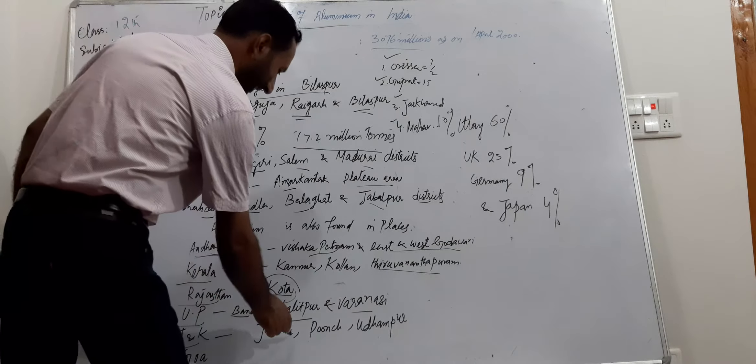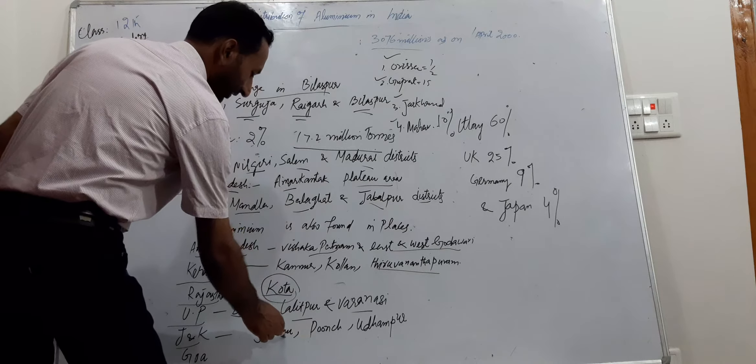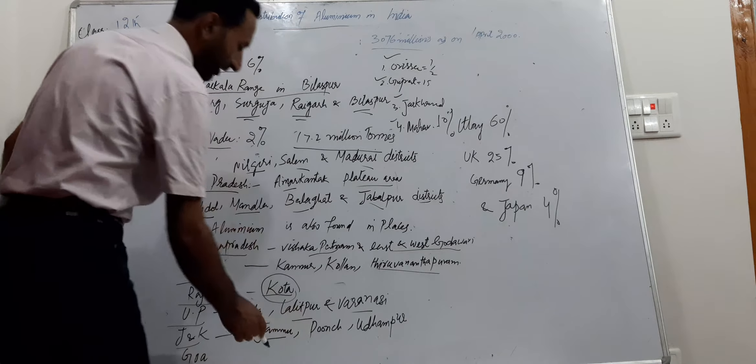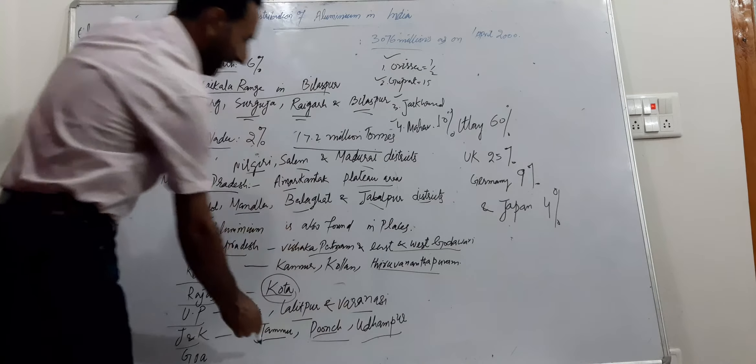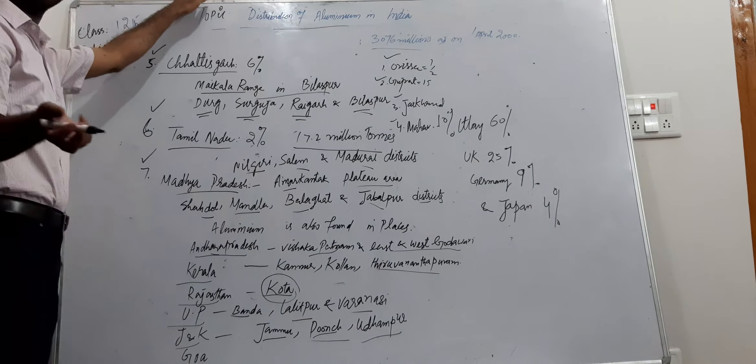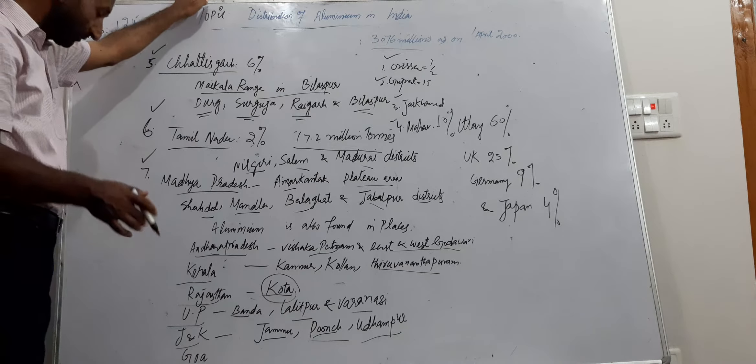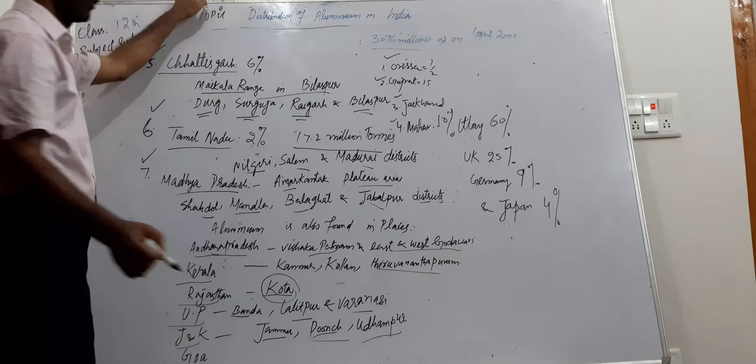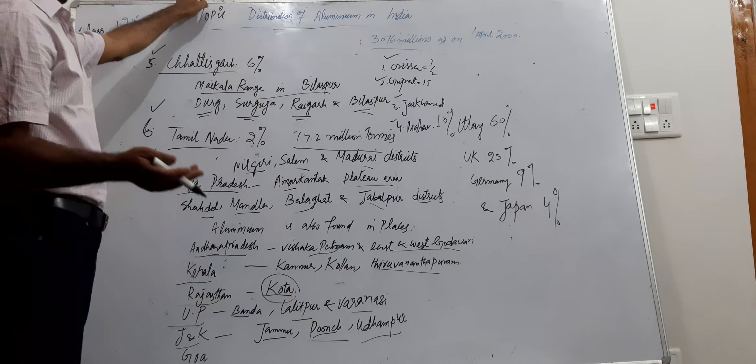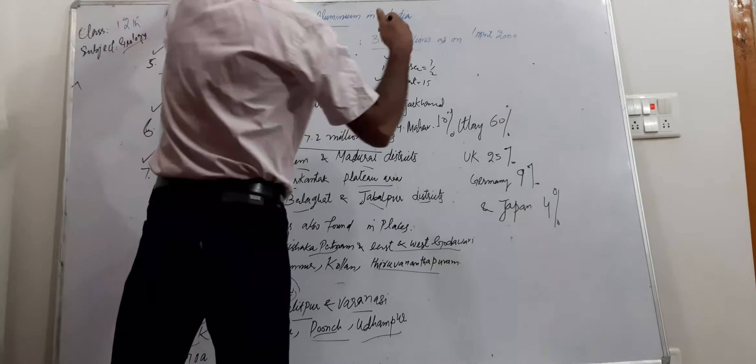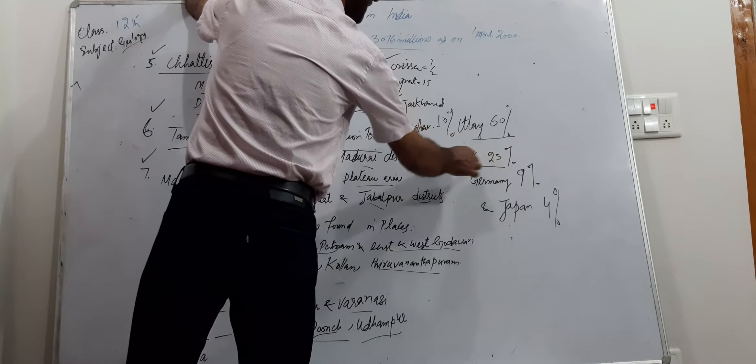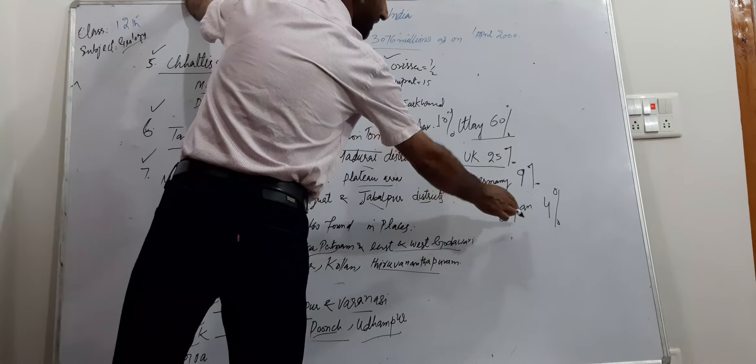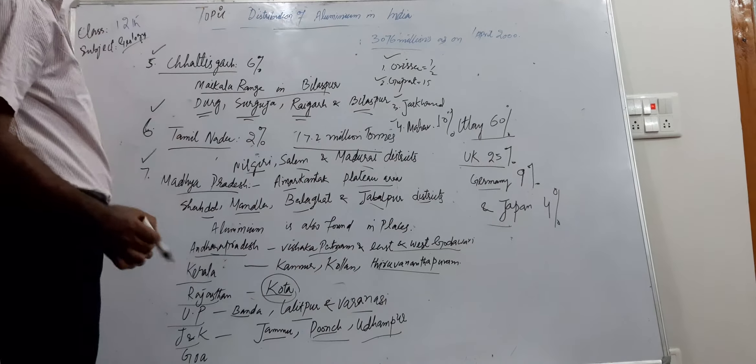J&K is also a state which provides aluminum from the districts of Jammu, Poonch, and Udhampur. Goa is also a state which provides us aluminum. We export aluminum to Italy 60 percent, UK 25 percent, Germany 9 percent, Japan 4 percent.